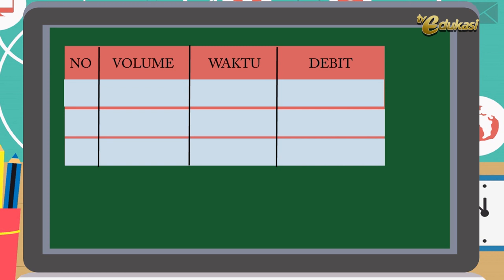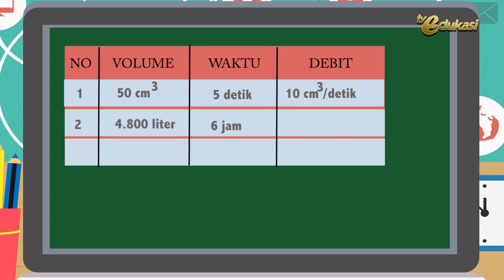Perhatikan tabel berikut. Nomor 1: volume 50 cm³, waktu 5 detik, debitnya menjadi 10 cm³ per detik. Nomor 2: volume 4800 liter, waktu 6 jam, debitnya 4800 dibagi 6 menjadi 800 liter per jam.